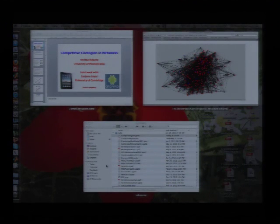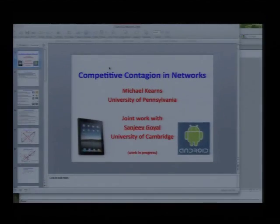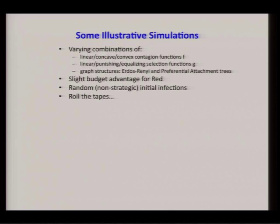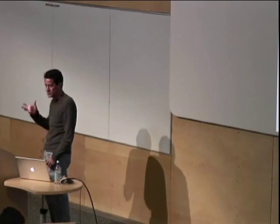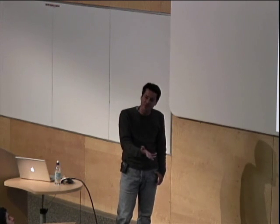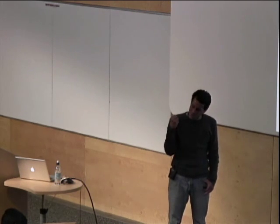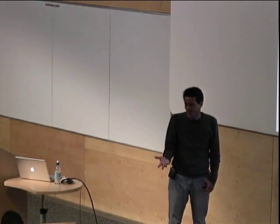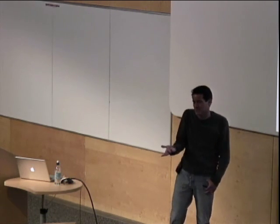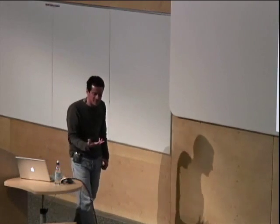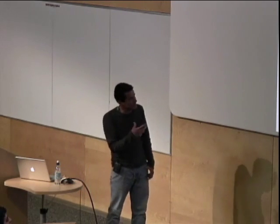Similar phenomena happen in preferential attachment graphs. One qualitative observation from staring at many simulations: even with a strongly punishing selection function, in preferential attachment there's a better chance for the party with the smaller budget to get lucky, because in a preferential attachment network there are hub vertices — if you manage to put your seed infections there, even with only four seeds versus six, getting more high-degree vertices gives you a better chance of a larger share of the final outcome. So punishment effects seem stronger in Erdős–Rényi than in preferential attachment.